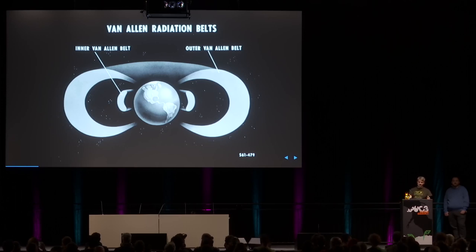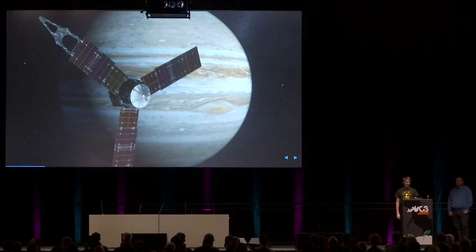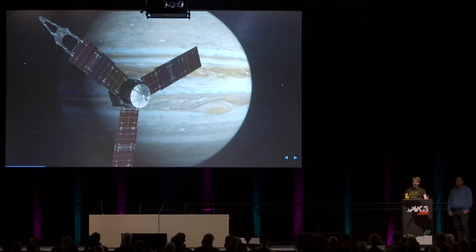If Earth's radiation belts aren't enough, consider the famous Juno–Jupiter mission. In the environment of Jupiter, they anticipated so much radiation that they decided to place all the satellite's electronics inside a one-centimeter-thick cube of titanium, famously known as the Juno Radiation Vault.